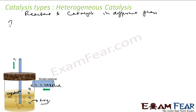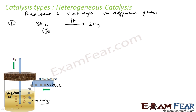Various examples of heterogeneous catalysis: first is oxidation of sulfur dioxide to sulfur trioxide, but here using platinum as catalyst. Sulfur dioxide and sulfur trioxide are gases, while platinum is solid — they are in different phases. So this is an example of heterogeneous catalysis.